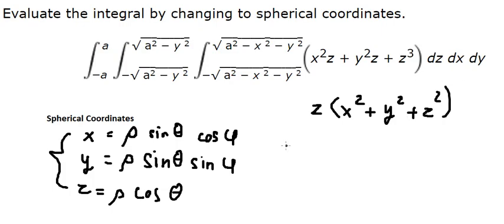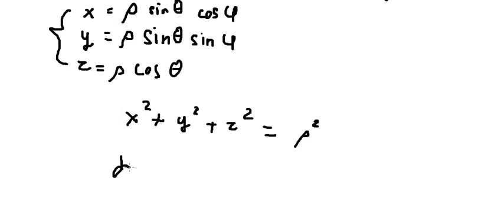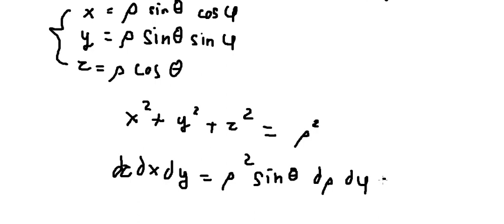For dz dx dy, we need to transform into rho squared sine theta. So we have d rho, d phi, d theta.